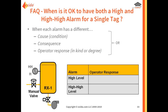Let's look at an example where both alarms are justified. For a tank where the operator controls a manual valve, the response to a high-level alarm would be to partially close the valve to reduce flow. But if that doesn't work and the level continues rising to the high-high level, the operator would close the valve completely to stop flow entirely. This shows the response is different in kind or degree between the two alarms — one case is reducing flow, the other is fully shutting it off.